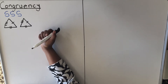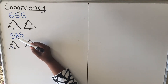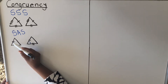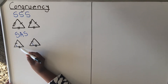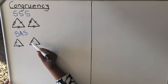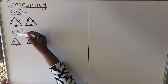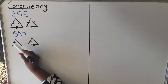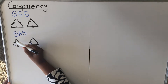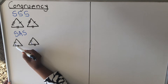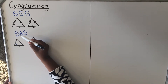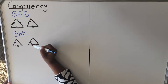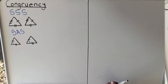The next condition is Side-Included-Angle-Side. When you look at these two triangles, this side is equal to that one, and this side is equal to that side. You also have an angle that's equal, but it's not just any angle — it must be the angle that is between the two sides. If it's an angle elsewhere, the triangles are not congruent. The angle between the two equal sides must also be equal.